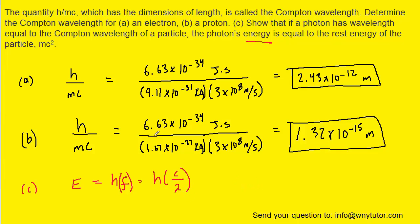Now for lambda, the question is telling us to use the Compton wavelength, which we were told at the beginning was h over mc. So we're going to replace the wavelength in the denominator here with the Compton wavelength of h divided by mc.